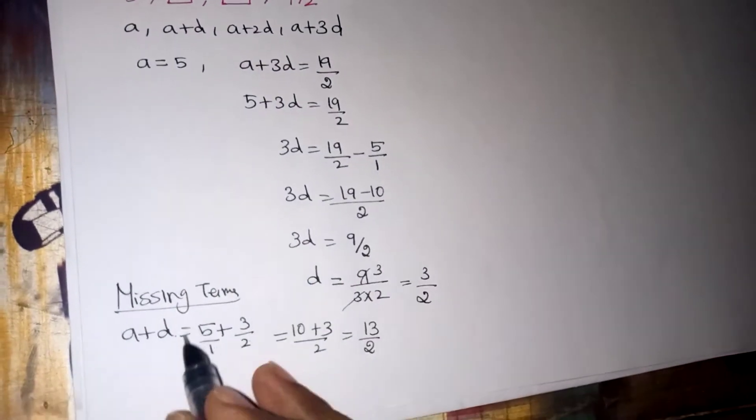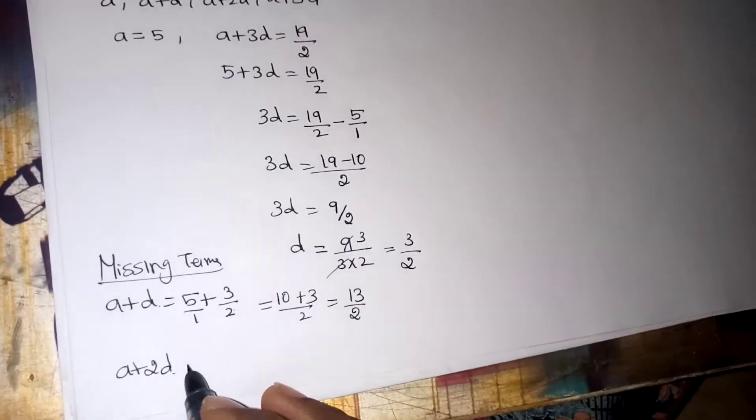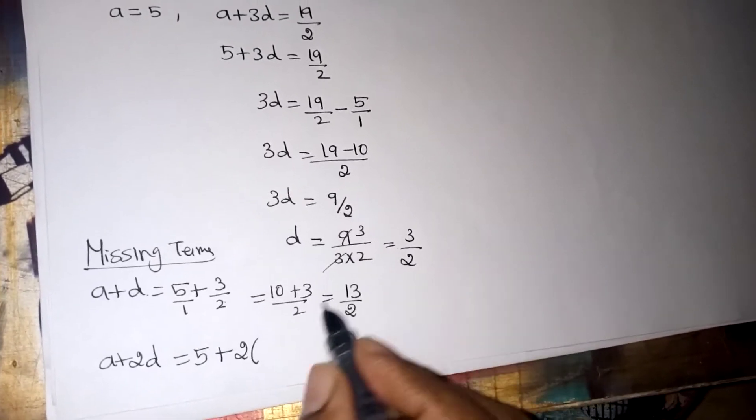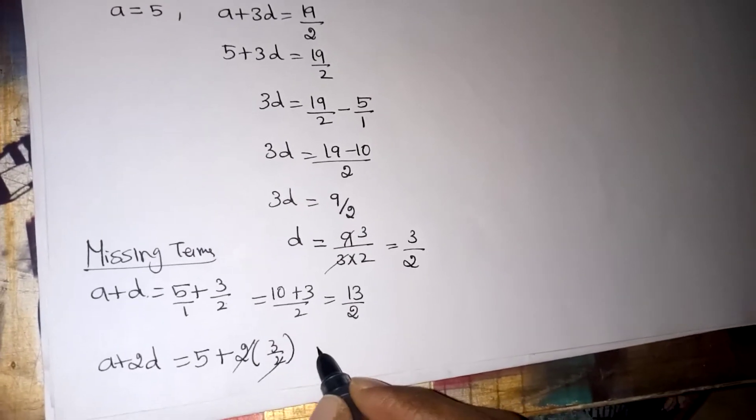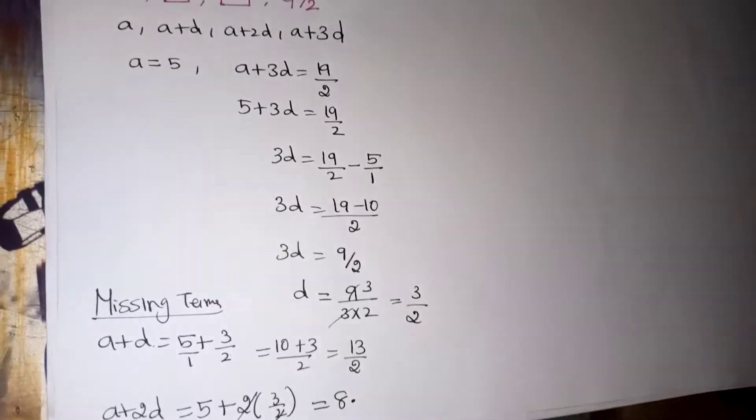Next missing box is A plus 2D. So A plus 2D is equal to A value again 5 plus 2 into D value 3 by 2. So here this 2 and this 2 will get cancelled. So 5 plus 3 will give you 8. So these 2 are the missing terms of the given problem.